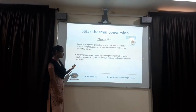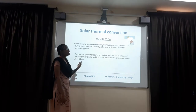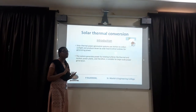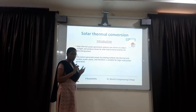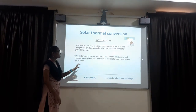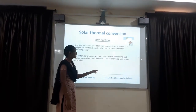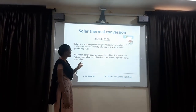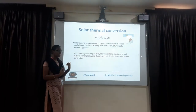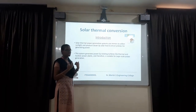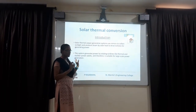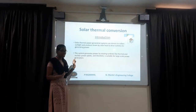In this solar thermal conversion system, we have two types - we use collectors and thermal conversion parts. This system generates power by rotating turbines, like thermal and nuclear power plants. Therefore, it is suitable for large-scale power generation. In any power turbines, we are using turbines. In this sense, solar energy is converted into electrical energy.